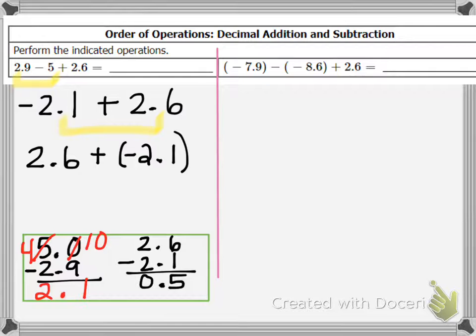So if you have positive 2.6 and you're adding negative 2.1, you're still in positive values for your final answer. Okay, let's look at the problem on the right.